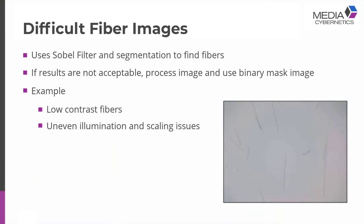Let's talk about some challenges. There's a wide range of fibers and a wide range of materials — what happens when you have a slightly challenging image? Here's an example: you can see the fibers visually, fairly good clean background. But when I run this image, some of these fibers have very low contrast — they really blend into the background. There's not much of a gray level difference between them. Also, if you have uneven illumination or hot spots, running Sobel filters or edge detection can be affected and that affects the results.